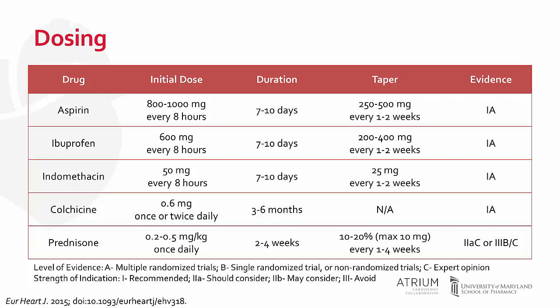Of note, before the guideline update, there were only limited non-randomized trials to support our first-line agents. Now, all are Class 1A for high evidence and recommendation. In terms of prednisone for second-line therapy, doses should be between 0.2 to 0.5 mg per kg once daily.